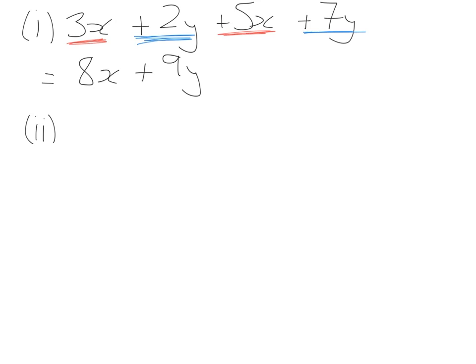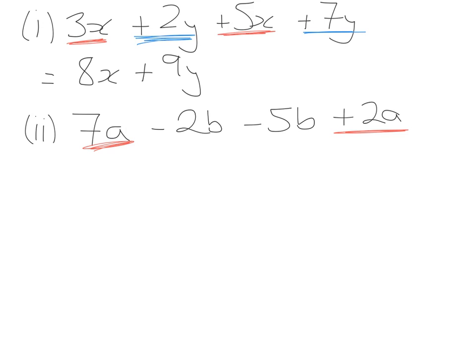The next example has some minuses: 7a minus 2b minus 5b plus 2a. Do the same thing — collect the like terms. 7a plus 2a gives 9a. Then for the b terms, minus 2b minus 5b — that's minus 2 minus 5, giving minus 7b. If you're stuck, think of it as having minus 2 euro in your account and spending another 5, so you're 7 euro in debt.